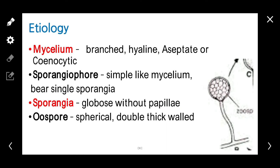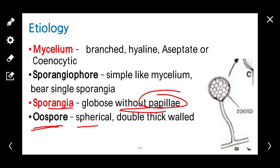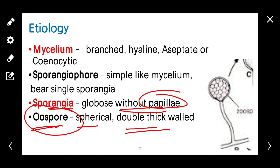There is a difference between the sporangia of Pythium and Phytophthora: Pythium sporangia are without papillae, whereas Phytophthora sporangia contain papillae. Oospores are spherical and double thick-walled. Oospores are sexual spores.